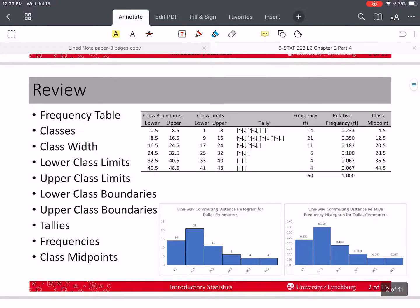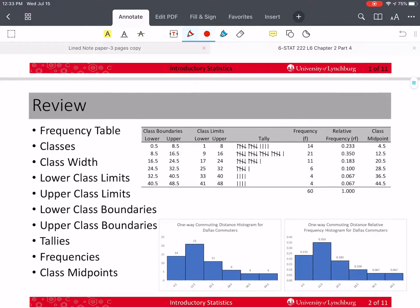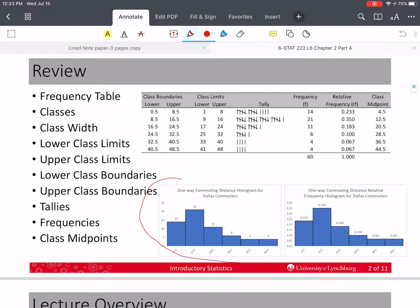So last time we used our frequency table and our relative frequency table to make a histogram here of the commute times, and we also made a relative frequency histogram. You'll notice that the histograms have basically the same shape. We also talked about the different distributional shapes, but we failed to go back to our data and look at these to see what kind of shape it was.